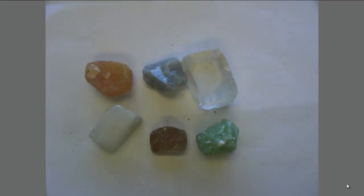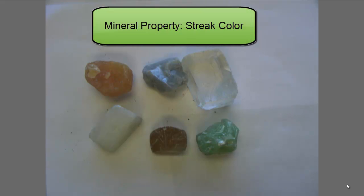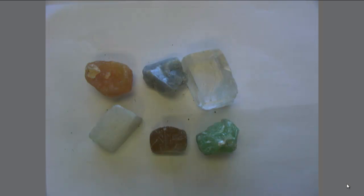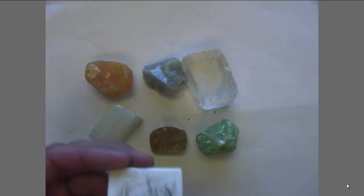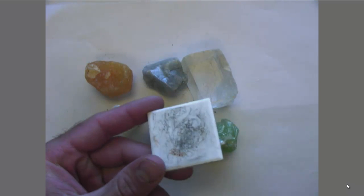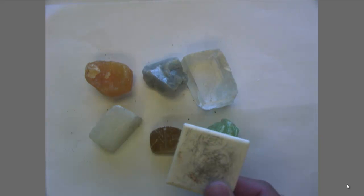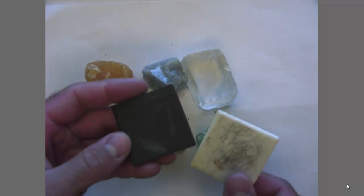Let's move on to the second trait that we're going to look at, and it's called the streak test, or the streak color. There are two ways you can go about doing this. First, we're going to look at using a streak plate, which is a piece of porcelain — it could be white or it could be black.